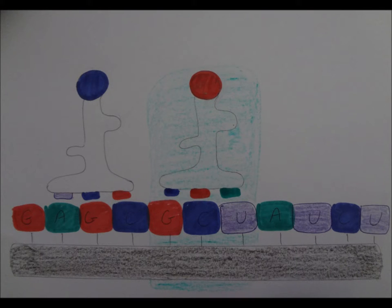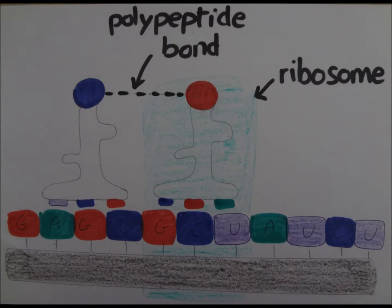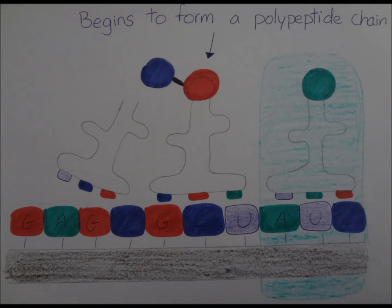The first tRNA molecule binds to the mRNA strand where the amino acid it holds binds to its neighboring amino acid on the second tRNA and so on. As more tRNA molecules bind to the mRNA strand, more amino acids form polypeptide bonds.